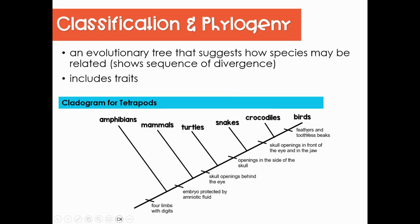A specific type of phylogenetic tree is called a cladogram. This shows how species may be related and includes traits. Any organism in front of a trait on the tree has that trait. For example, 'skull openings behind the eye' would apply to turtles, snakes, crocodiles, and birds — anything in front of that trait on the tree. 'Feathers and toothless beaks' would include only birds.